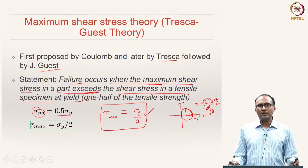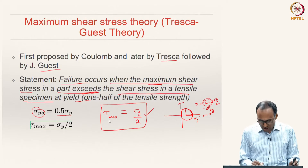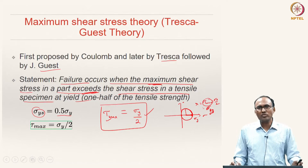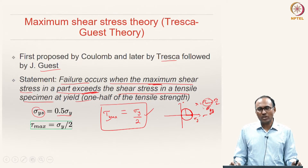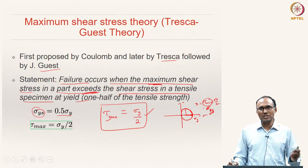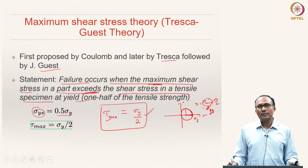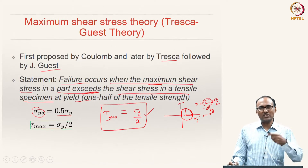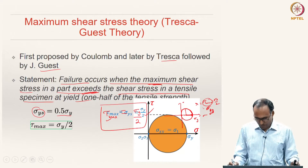For any given stress state, all you need to do is calculate the value of tau_max. Basically, draw the Mohr's circle and get its radius. You get the value of maximum shear stress induced in the material, and if that is 50 percent of the uniaxial yield strength of the material then the material fails; otherwise if it is less than that, the material is safe.